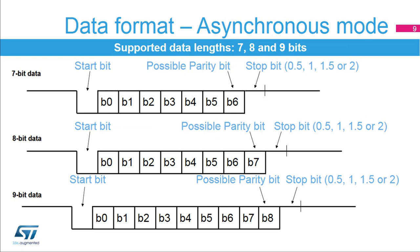The frame format used in asynchronous mode consists of a set of data bits in addition to bits for synchronization and optionally a parity bit for error checking. The USART supports 7, 8, or 9-bit data lengths. A frame starts with one start bit where the line is driven low for one bit period, signaling the start of a frame for synchronization. The start bit is followed by 7, 8, or 9 data bits. If parity control is enabled, the parity bit is transmitted as the last data bit and is included in the data length count. Finally, a number of stop bits — 0, 1, 1.5, or 2 — where the line is driven high, end the frame.